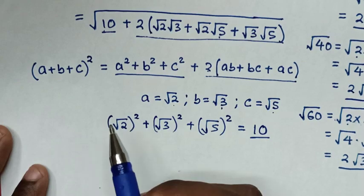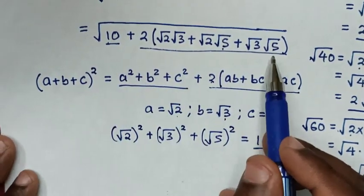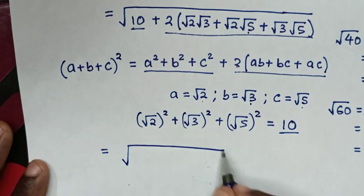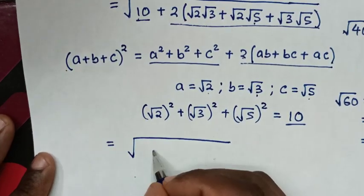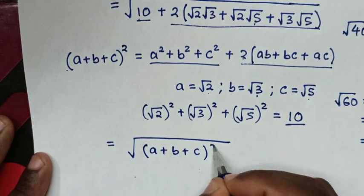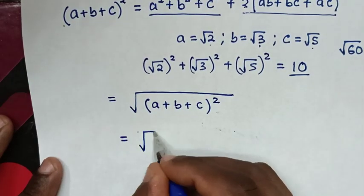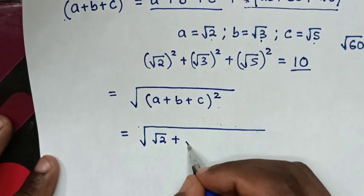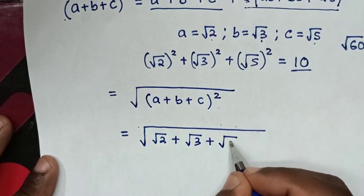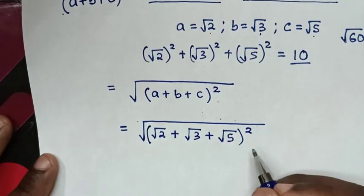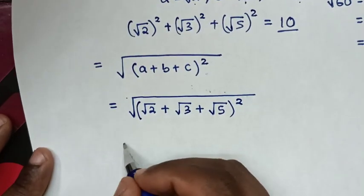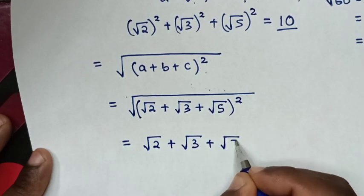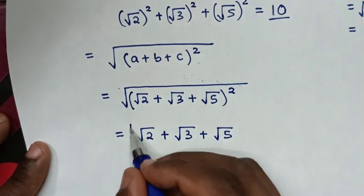This matches the √10 in our expression. So the right side of the rule corresponds to this expression, meaning it equals the square root of the left side of the rule: square root of (a + b + c)². That gives square root of (√2 + √3 + √5)², and the square root cancels with the square, so the final answer is √2 + √3 + √5.